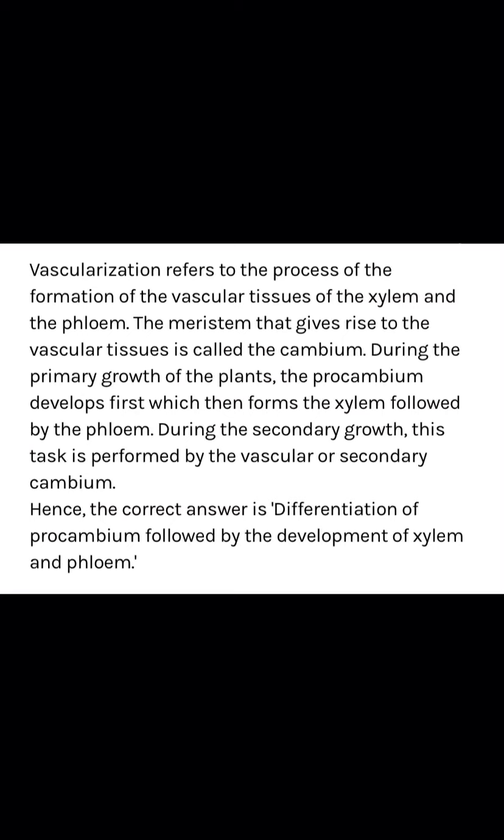During the primary growth of plants, the procambium develops first, which then forms the xylem followed by the phloem. During secondary growth, this task is performed by the vascular or secondary cambium. Hence, we can say that the development of these two conducting tissues in primary stems is actually the vascularization of these stems.